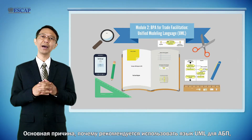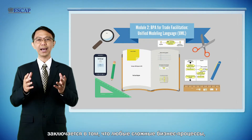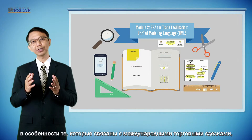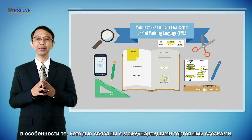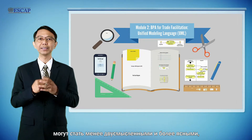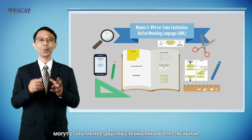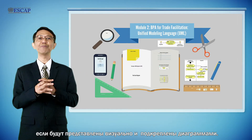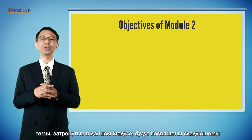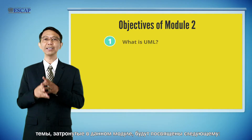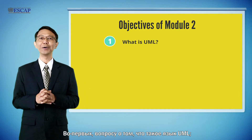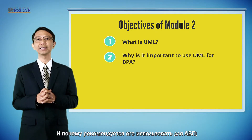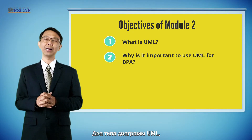A key reason why UML is recommended for BPA is that any complicated business processes, especially those related to international trade transactions, can be less ambiguous and more precise when they are visualized and captured with diagrams. Therefore, topics that we are going to cover in this module include, firstly, what is UML and why it is recommended to be used for business process analysis.